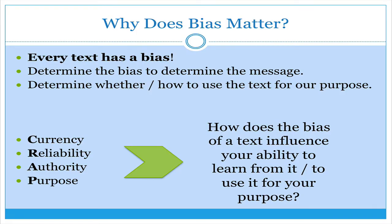So why does bias matter? Why does our knowing what bias is matter? Why do we need a procedure by which we assess the bias of something? We have to understand that every text has a bias. Texts are made by human beings — they're not oftentimes made by machines. Since we are human beings, we have a bias for or against something. We see something in a certain way, we have a certain perspective on an issue, and those biases come into our work, sometimes intentionally, and sometimes more subtly, almost subconsciously.